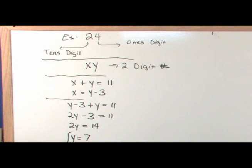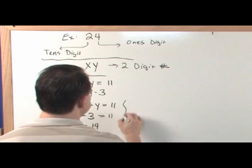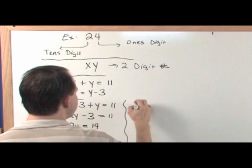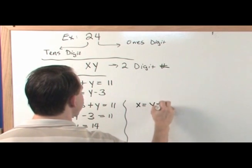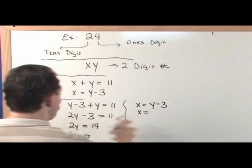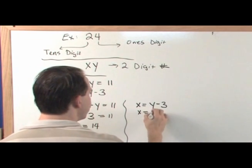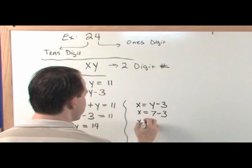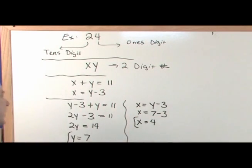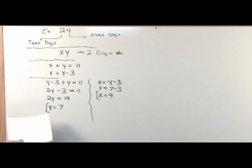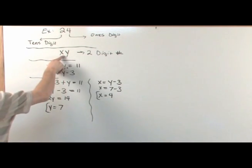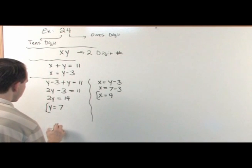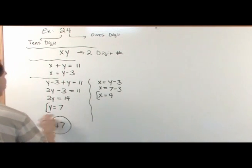That's one part of the answer. Now let's find the other part. We know y equals 7, so let's plug it back into x equals y minus three: x equals seven minus three, which is four. So x is four and y is seven, and our two-digit number is 47.